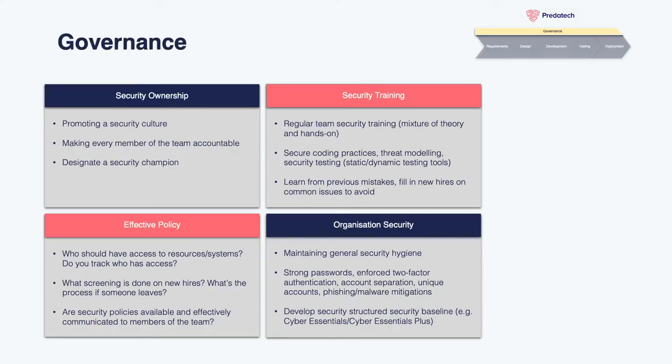We'll start with the governance side of things — practices that are more closely aligned with your organization and the people on your team rather than the application itself. Governance is important because it will underpin the entirety of your SDLC. We'll begin with security ownership, which is about making every person who has a hand in the product's development accountable. You want to promote a security culture, showing the team that security is important and getting people talking about it. Security is not just the job of one person — it's shared among the team, and everybody has their own part to play.